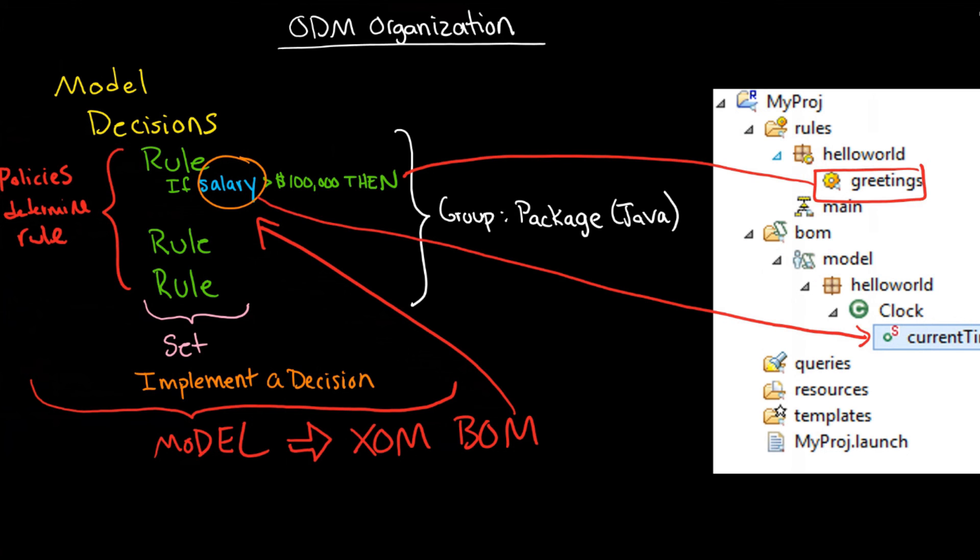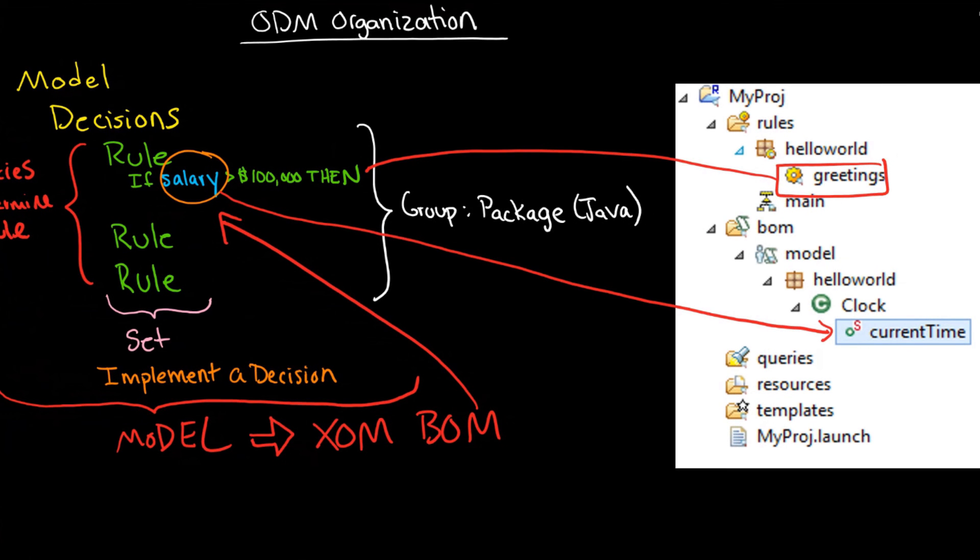This is not one-to-one. This is a different example here. But in this case, this is actually current time is what you'd be seeing here instead of salary. But you get the idea. This would say salary.